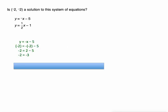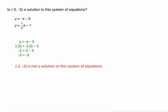So since this is a false statement—negative 2 doesn't actually equal -3—we don't even need to check the second equation. We can say now that (-2, -2) is not a solution to this system of equations.